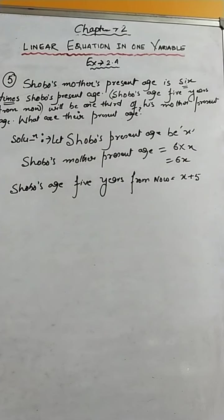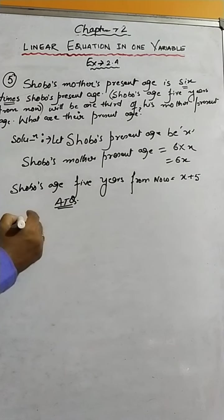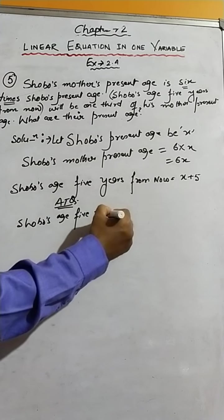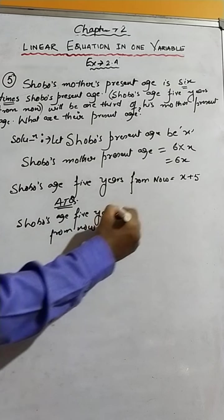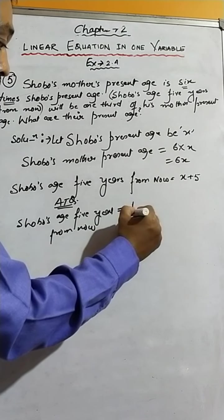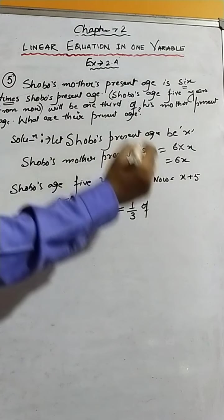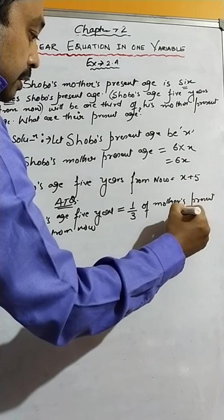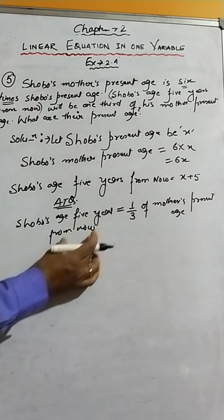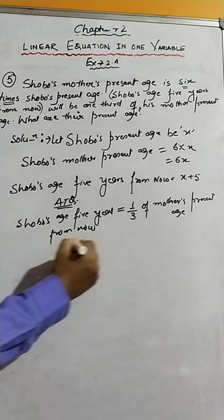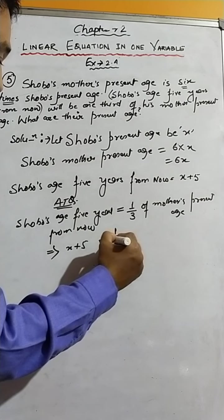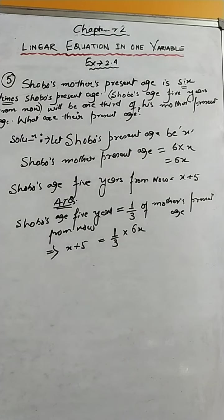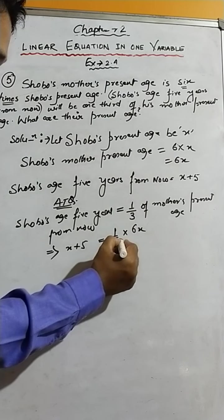Now it is time to write the equation. Shobu's age five years from now will be one third of his mother's present age. So we write: X plus five equals one third of six X, which is mother's present age. Putting in the values, X plus five equals one third into six X.